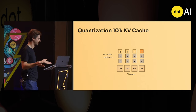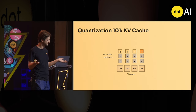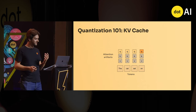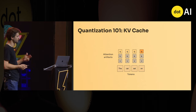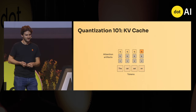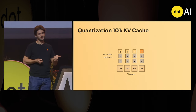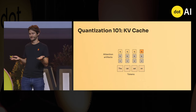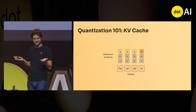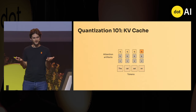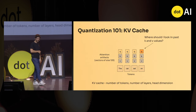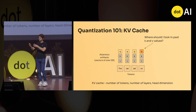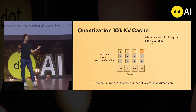Let's say you have four tokens so far — 'the cat sat on' — and you want to predict the next one. At each layer, the attention produces three artifacts per token: the key, the value, and the query — K, V, and Q. At this point you can guess what the KV cache is: it's K and V. But why do you need to cache it?